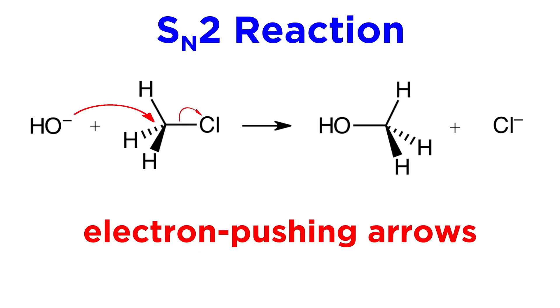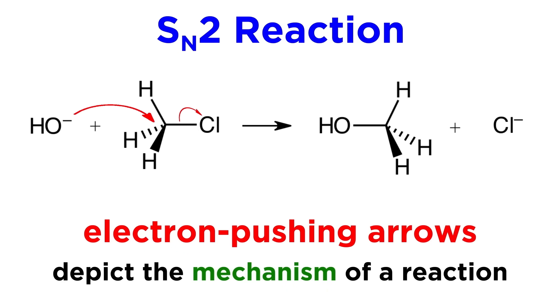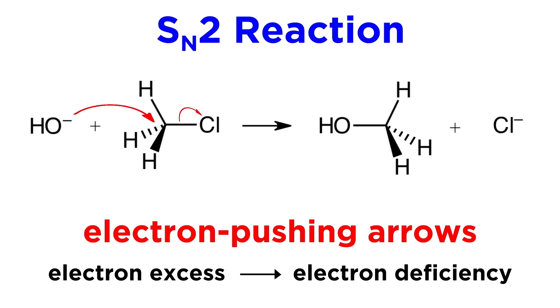This event is depicted by these electron pushing arrows, and this is another thing we will have to get used to. These arrows are used to show precisely how the mechanism of a reaction takes place, and they must be shown in a very specific way. They will always go from electron excess to electron deficiency.